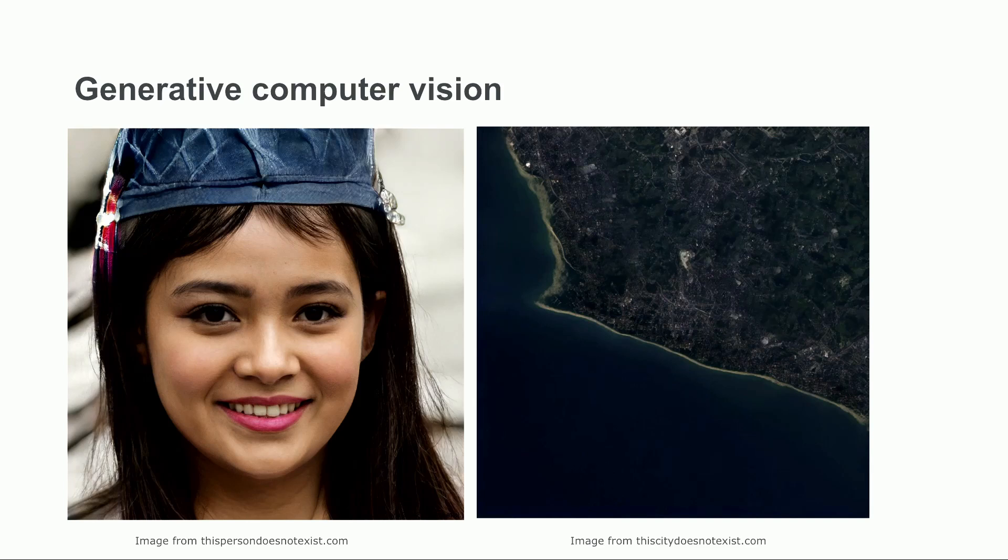Generative computer vision works by learning the conditional probability distributions that make images look realistic and coherent. These models learn the statistical patterns of how the visual world fits together. For example, that faces have features like eyes, nose and mouth, and the characteristic patterns of cities in aerial views. Once a model has learned these probability distributions, it can sample from them to create new coherent images. Websites like ThisPersonDoesNotExist.com demonstrate this model's ability to generate photorealistic images of entities that are not real.